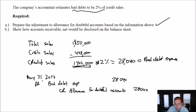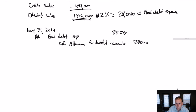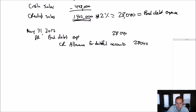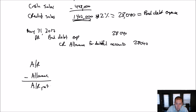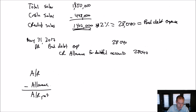Show how accounts receivable net would be disclosed on the balance sheet — that's a little trickier. How would accounts receivable net be disclosed on the balance sheet? We take our accounts receivable minus our allowance for doubtful accounts, and that equals our net AR. This is a little bit like when we have a capital asset, like equipment: equipment minus accumulated depreciation equals net book value. Same thing with receivables — our receivables are $235,000.